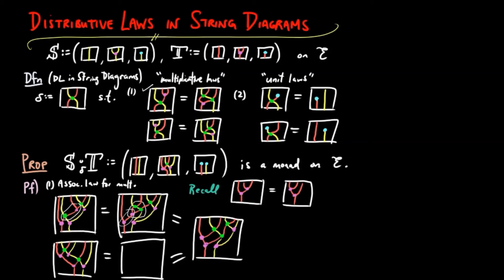Similarly, we can use the lower multiplicative law for a distributive law to obtain the following. And by using the associative law for the multiplication of the monad S, we have the bottom right equality holding. Therefore, the associative law for the multiplication holds.